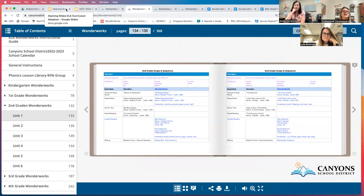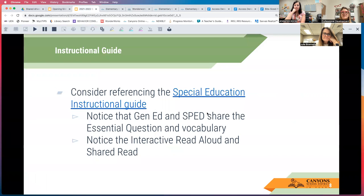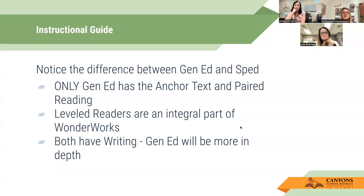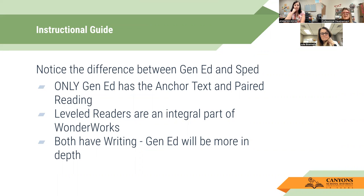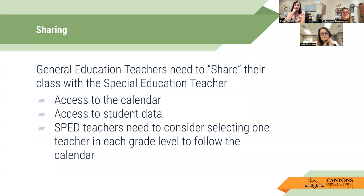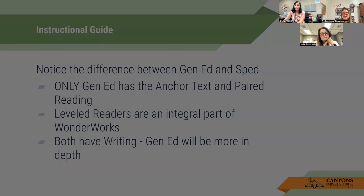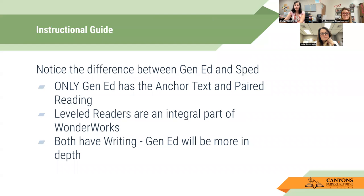So gen ed and special ed share the essential questions and vocab, the interactive read aloud, and the shared reads. The difference is that only gen ed has anchor text and paired reading, while leveled readers are really a big part of Wonderworks. Both have writing, but special ed will not be as in-depth as gen ed, in part because those students are learning basic skills. Any questions on that instructional guide piece before I go to the next section?